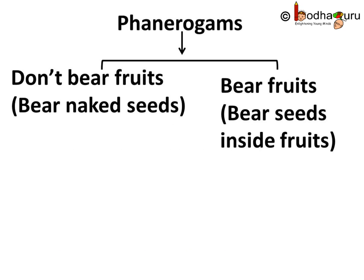On the other hand, plants with well-differentiated reproductive tissues that ultimately make seeds are called Phanerogames. Phanerogames reproduce through seeds — like the mango tree. As we know, the seed resides inside the mango fruit. But it is not true for all Phanerogames.